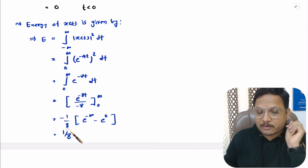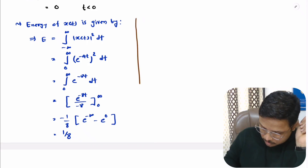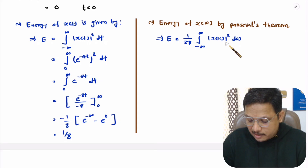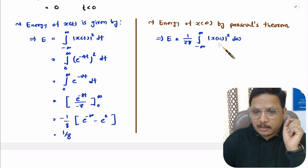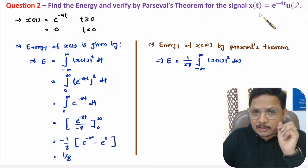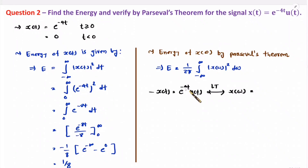Now I will verify this using Parseval's theorem. The energy using Parseval's theorem is E = (1/2π) times the integration from minus infinite to plus infinite of |X(ω)|² dω, where X(ω) is the signal in the frequency domain. To get the signal in the frequency domain we need to take the Laplace transform. For x(t) = e^(-4t)·u(t), the Laplace transform gives X(ω) = 1/(4 + jω).